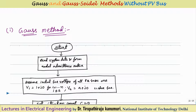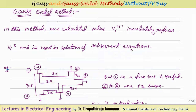The Gauss-Seidel method differs from the Gauss method in one key way: in the Gauss method we always use previous-iteration node voltages throughout an iteration, whereas in the Gauss-Seidel method, the newly calculated value Vi(C+1) immediately replaces Vi(C) and is used in the solution of subsequent equations within the same iteration.